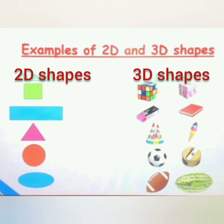The next one is a triangle in 2D shape, and a birthday cap or an ice cream cone in 3D shape — this shape is a cone. The next one is a circle in 2D, and in 3D shapes it is a sphere, like a football. The next one is an oval shape in 2D, and in 3D shape it's a rugby ball or a watermelon.